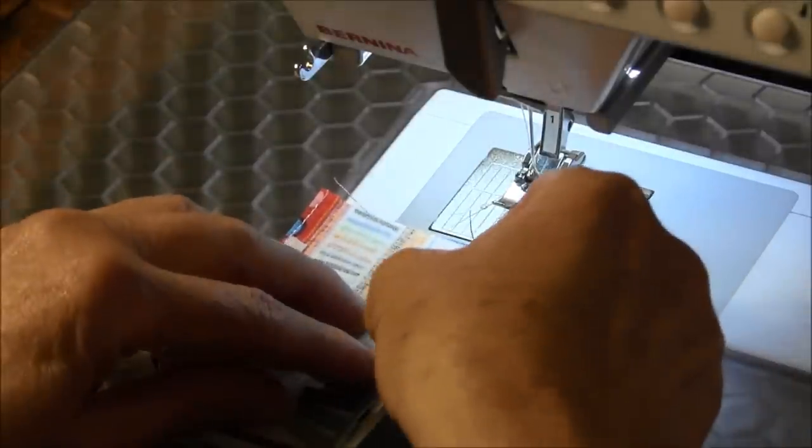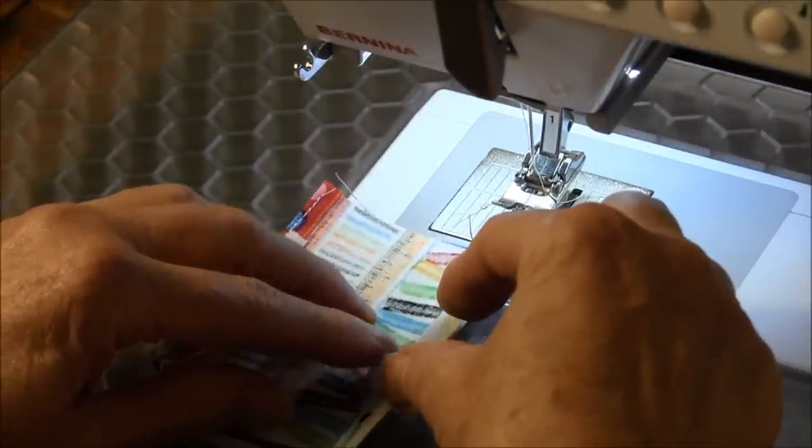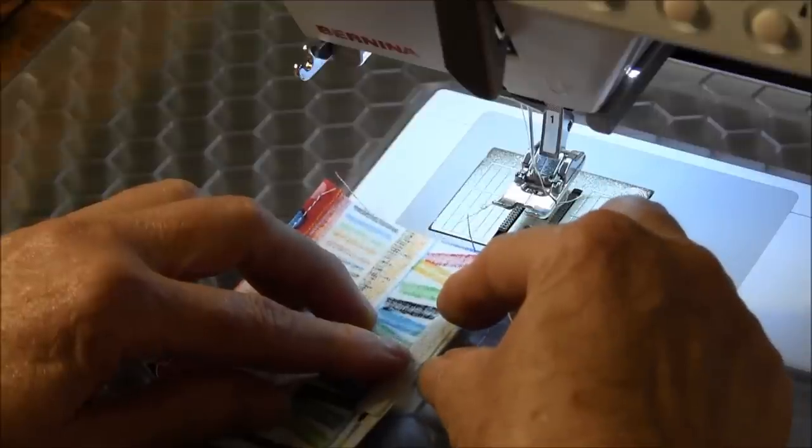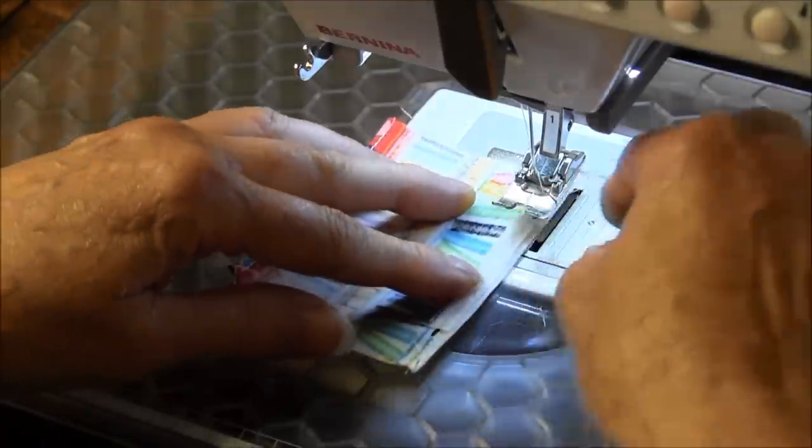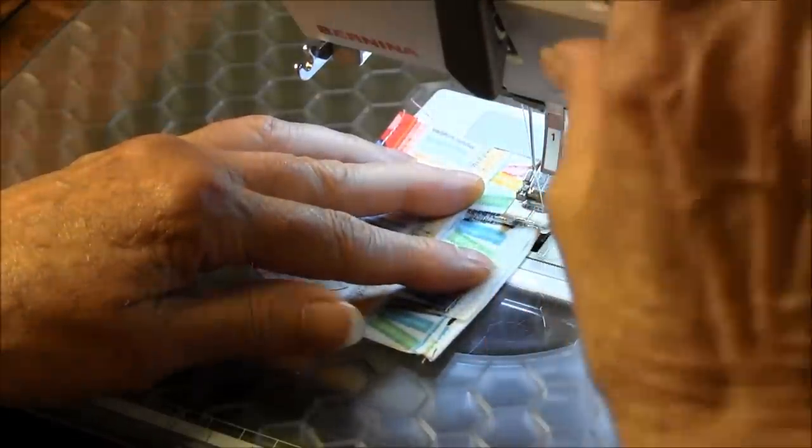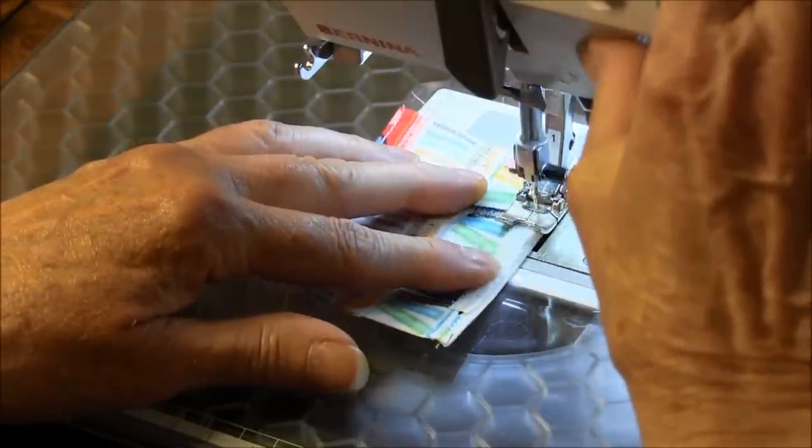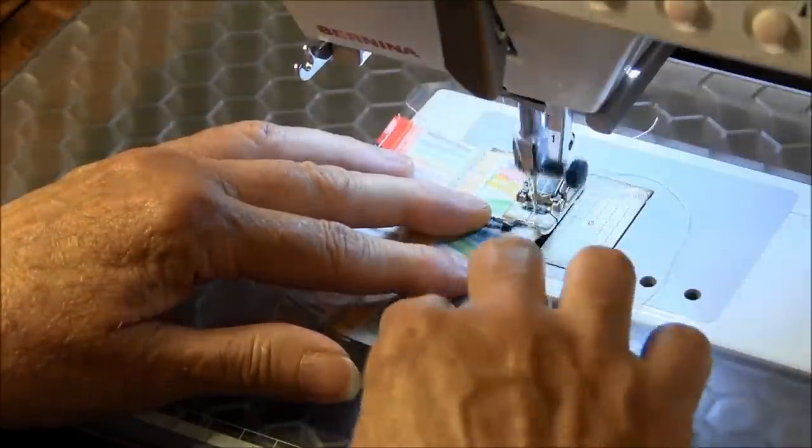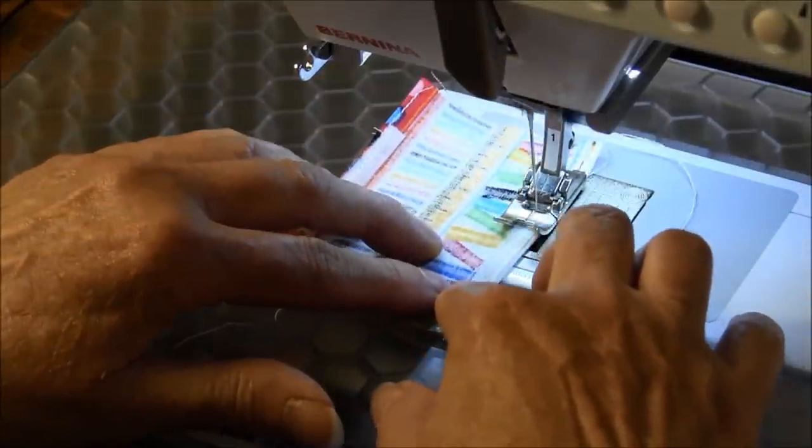We're going to place the other piece of velcro on the other side and center it and stitch it in place, back tacking again at the beginning and the end.